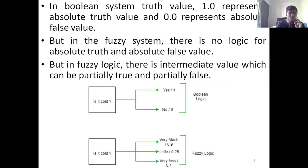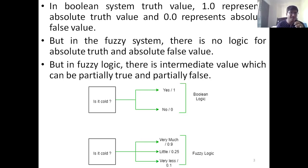In real-time or normal systems, if you talk about Boolean algebra, there can only be two things: something can be true or false. For truthness, we associate the value 1.0, and for falseness, we associate a value of zero. So a statement can either be true or false.